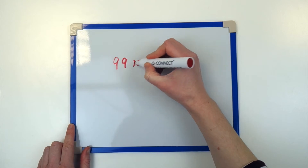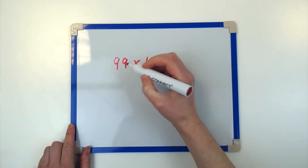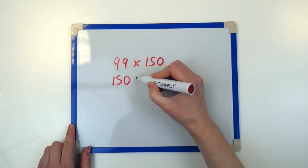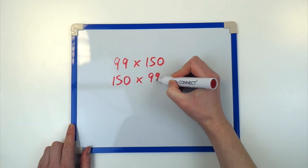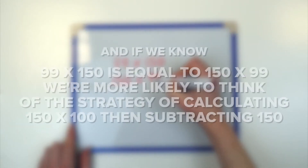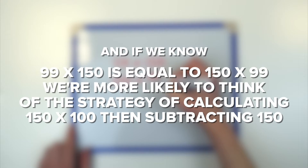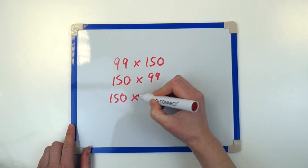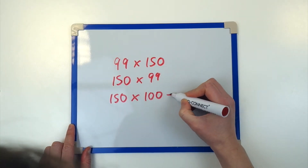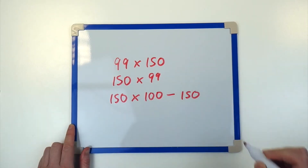And if we change 99 times 150 to 150 times 99, we're more likely to think of the strategy of calculating 150 times 100 and then subtracting 150.